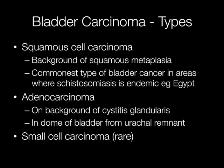Pure squamous cell carcinoma arises on a background of squamous metaplasia and is the commonest type of bladder cancer in areas where schistosomiasis is endemic, particularly Egypt. Pure adenocarcinomas may arise on a background of cystitis glandularis — that is a glandular type of metaplasia — and they can also occur in the dome of the bladder from urachal remnants. Small cell carcinoma in its pure form is a rare type of bladder cancer.